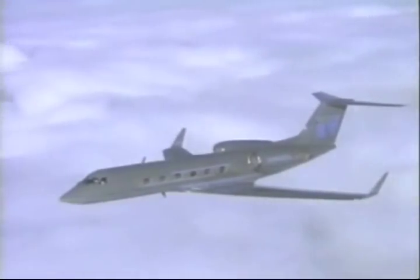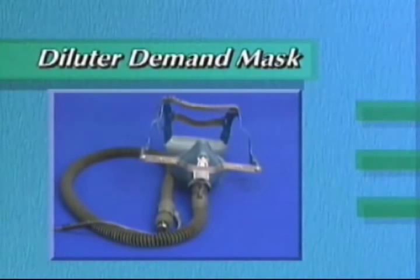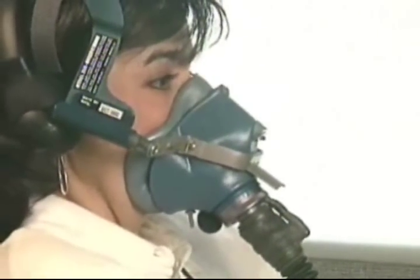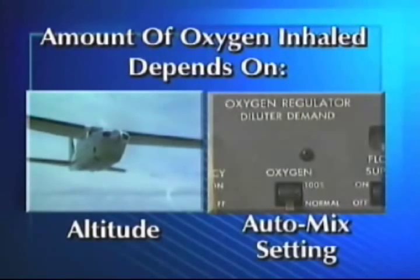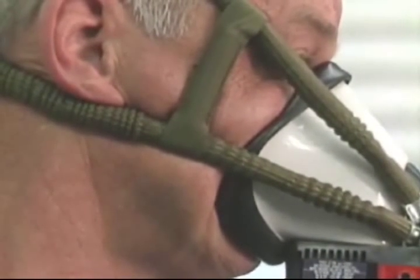With increased aircraft technology and altitude ceilings, two additional masks were developed. The diluter demand mask is designed to facilitate an air and oxygen-tight seal to the face; the amount of oxygen inhaled is dependent upon the altitude and the setting of the auto-mix lever. The latest generation is the pressure demand mask, designed to create an airtight oxygen seal on the face. The inhalation and exhalation valves permit oxygen pressure to build up within the face mask, supplying oxygen under pressure to the lungs.